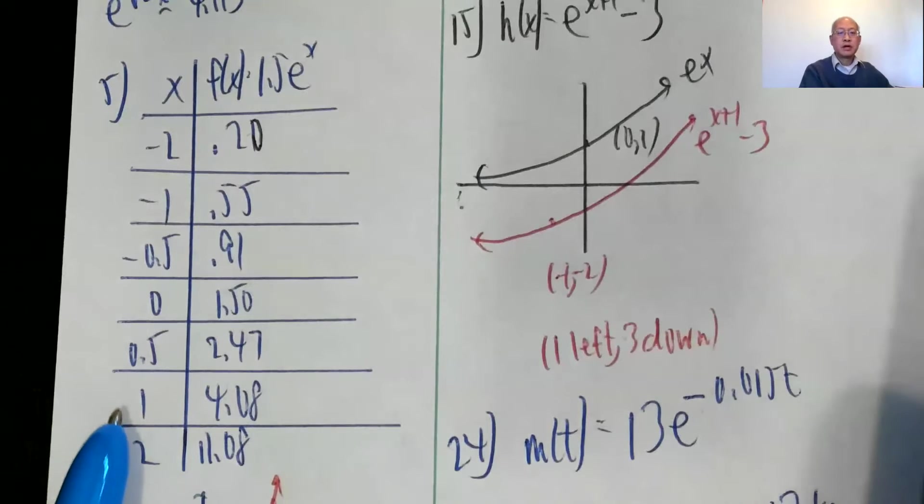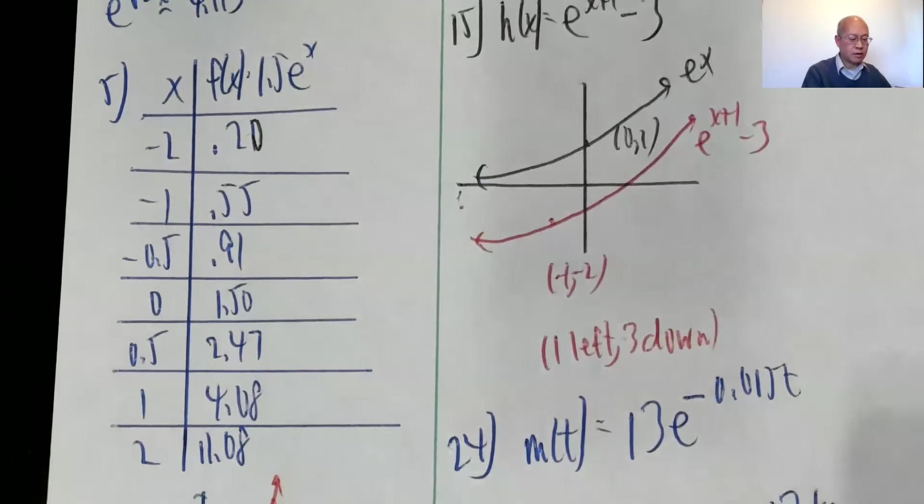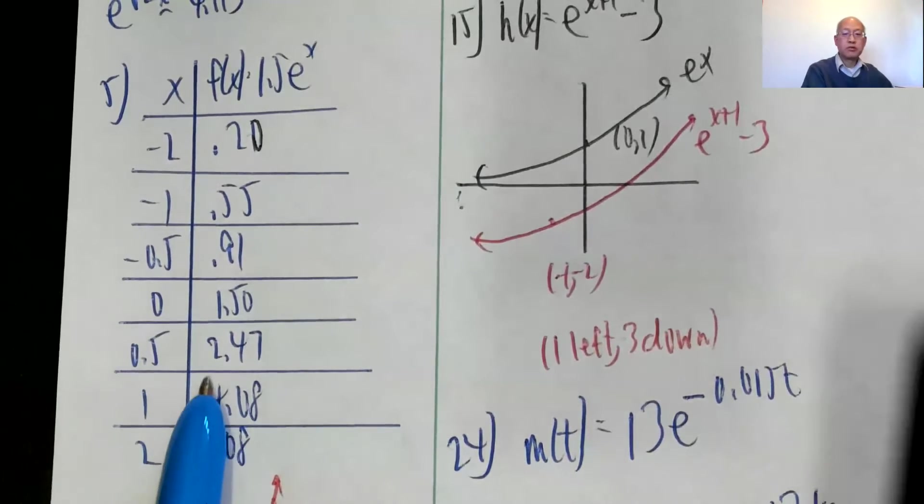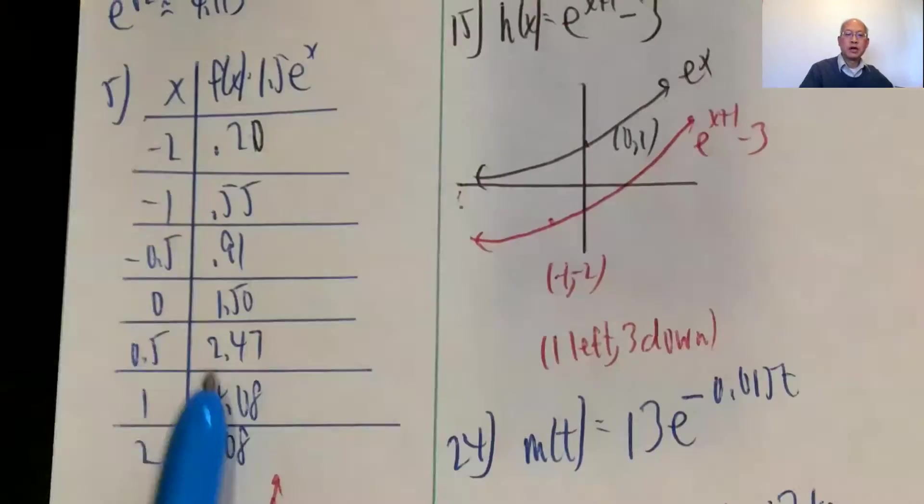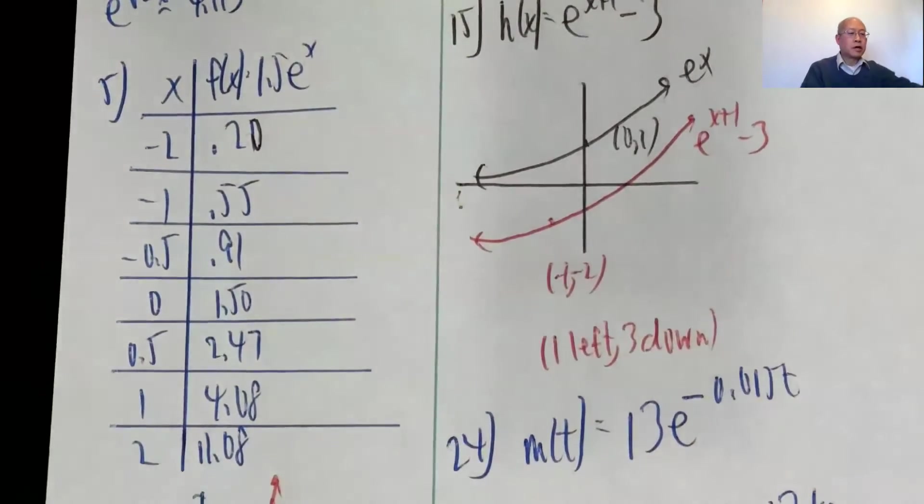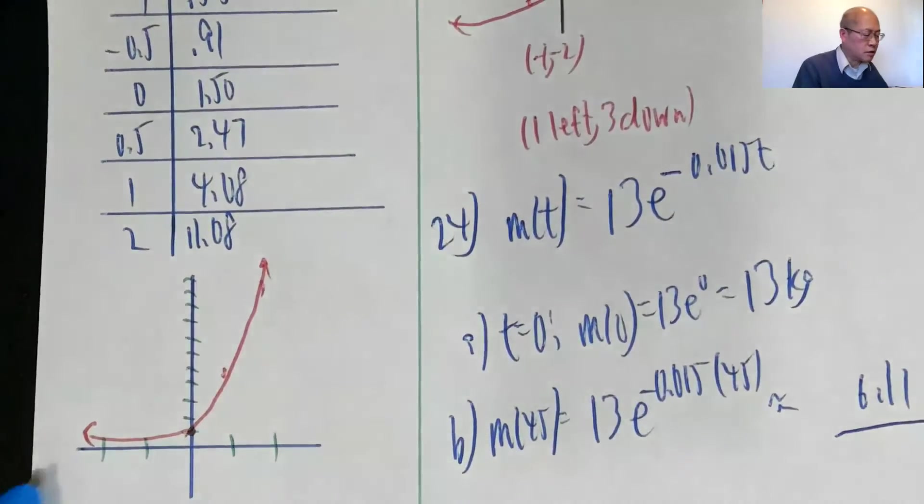I guess I should have put 0.20 is closer, and how about I do, let's say this one, 1.5 e to the 0.5, 2.47, 1.5 e to the 0.5, 2.47. Okay, so plot all the points, and we get something that looks like this, very similar to what we had before.